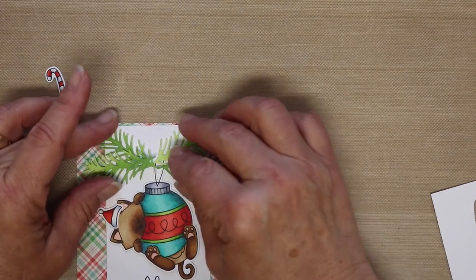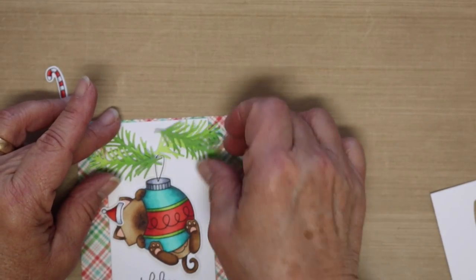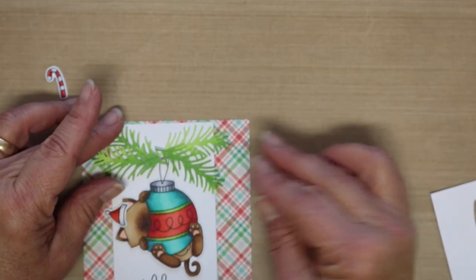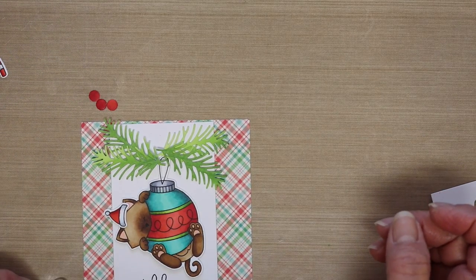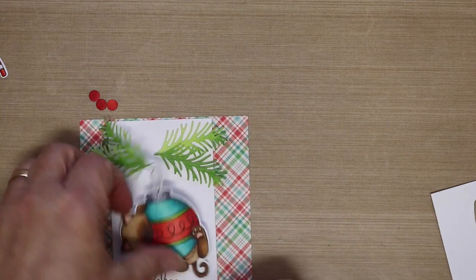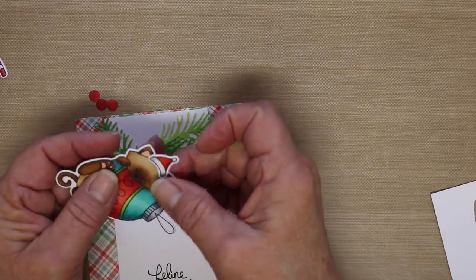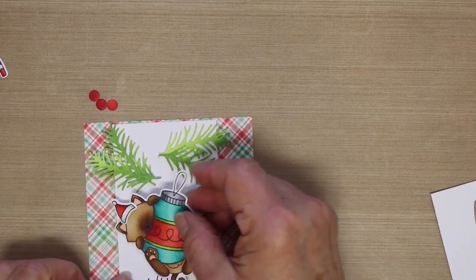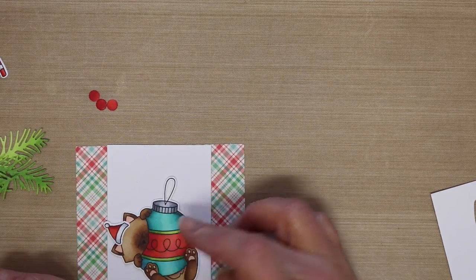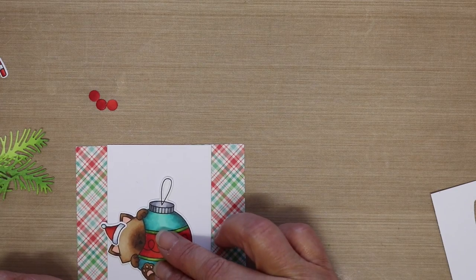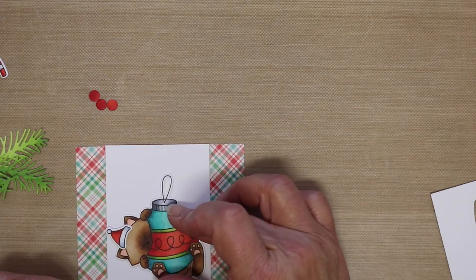And I used this technique because I did not have any cardstock that I felt like matched the entire theme of what I was doing here. So now I'm attaching his hat with a few glue dots. And then I'm going to figure out where I want to place Newton.